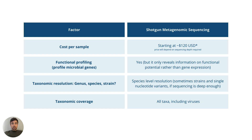The first consideration is cost. Prices start at around $120 per sample, though this can vary widely depending on the depth of sequencing required. More sequencing depth gives you more information about different microbial strains or even single nucleotide variations in genes. Greater depth means greater cost, but depth isn't always necessary for all applications. The next consideration is functional profiling. Shotgun sequencing can reveal functional potential by profiling microbial genes, so it's important to consider whether you need to know about microbial genes, and if so, at what depth.